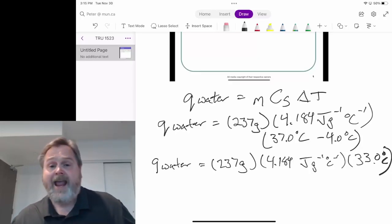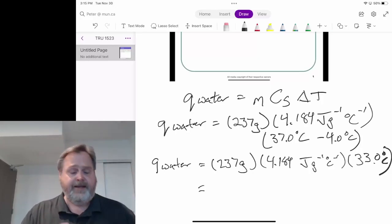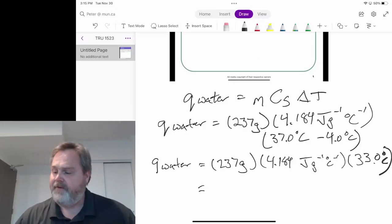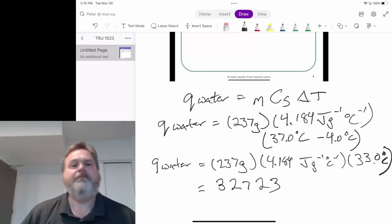We have our problem set up. Now we just need to calculate our answer. So let's do some quick numbers here: 237 times the 4.184 times the 33 is going to give me 32,732. Let's keep track of what's going on with our units.